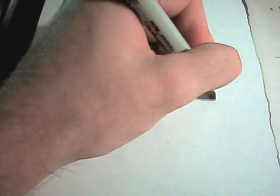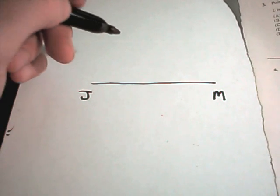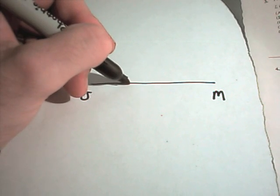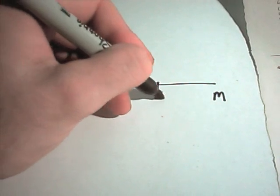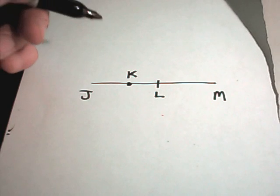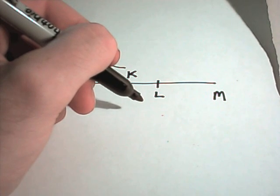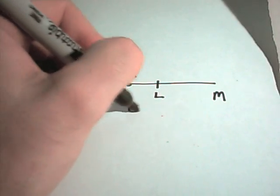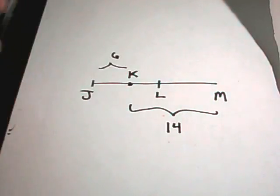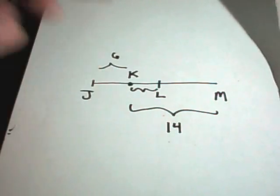Let's see, in number 3, it says if points K and L lie on this line JM, it says KM is 14, KJ is 6, and L is the midpoint. So, we want to figure out KL. Okay, so I'm going to draw a little picture here for my line. So, we've got J and M. We'll put K somewhere in the middle. So, we'll put K right there. It says L is the midpoint. So, we know that this distance KJ is 6. We know that the distance from KM is 14. We know that this is the midpoint, so we want to know what simply KL equals in this case.